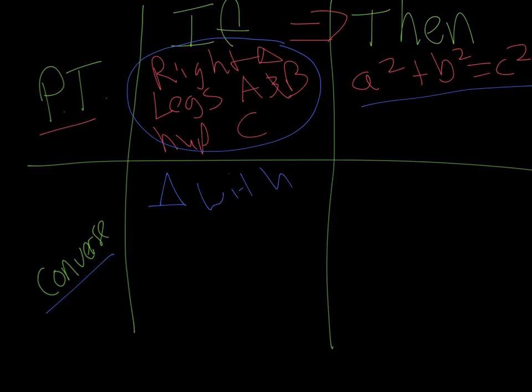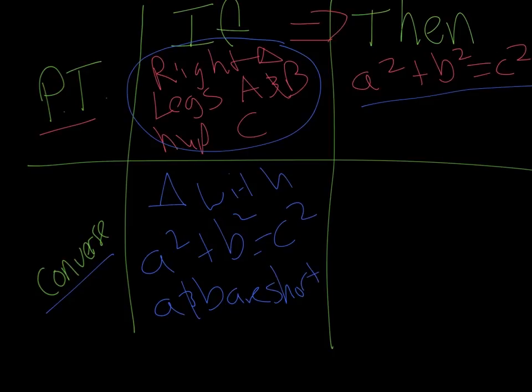with A squared plus B squared equal to C squared, where A and B are the legs, or I should say shorter sides, and C is the long side, then